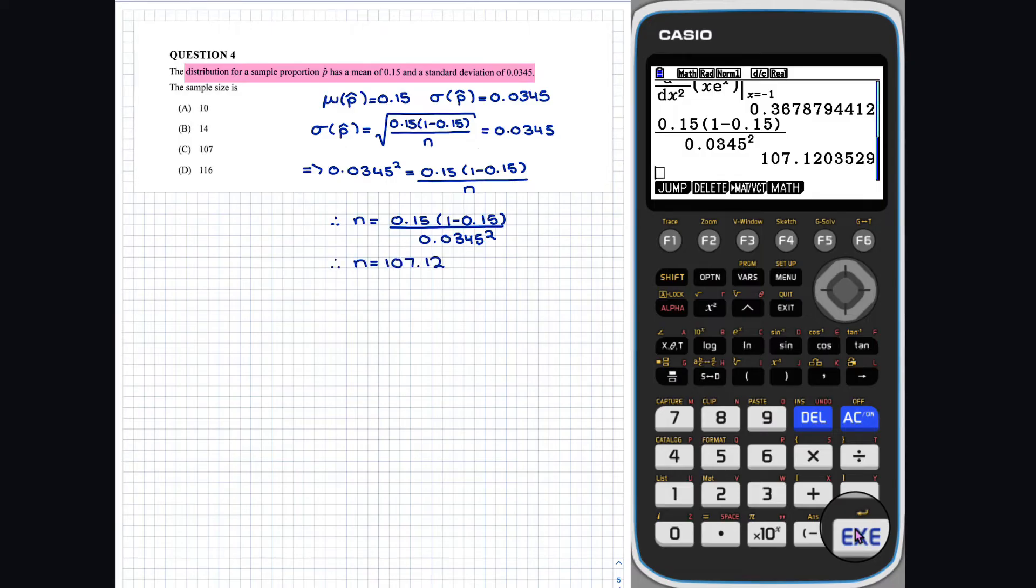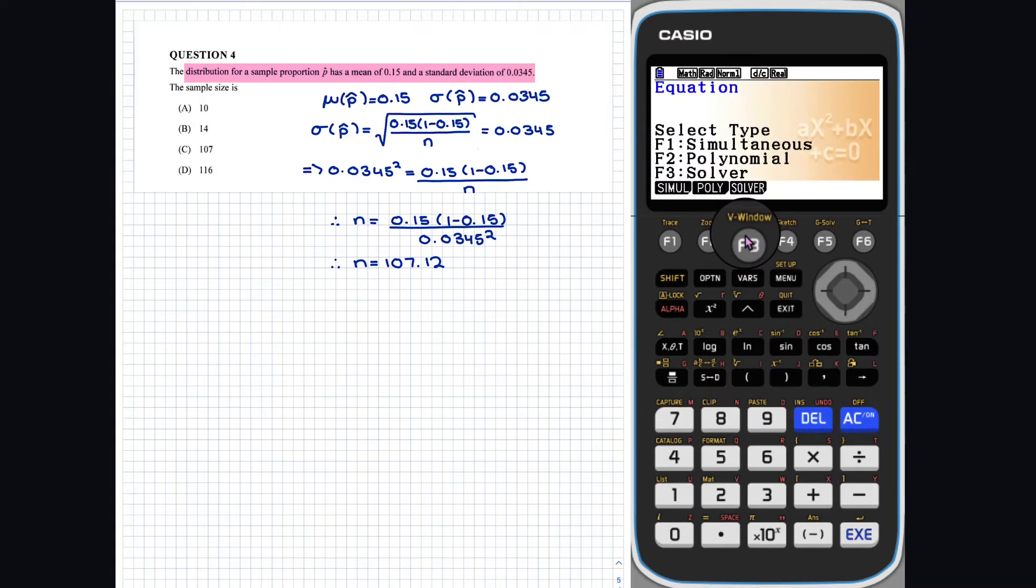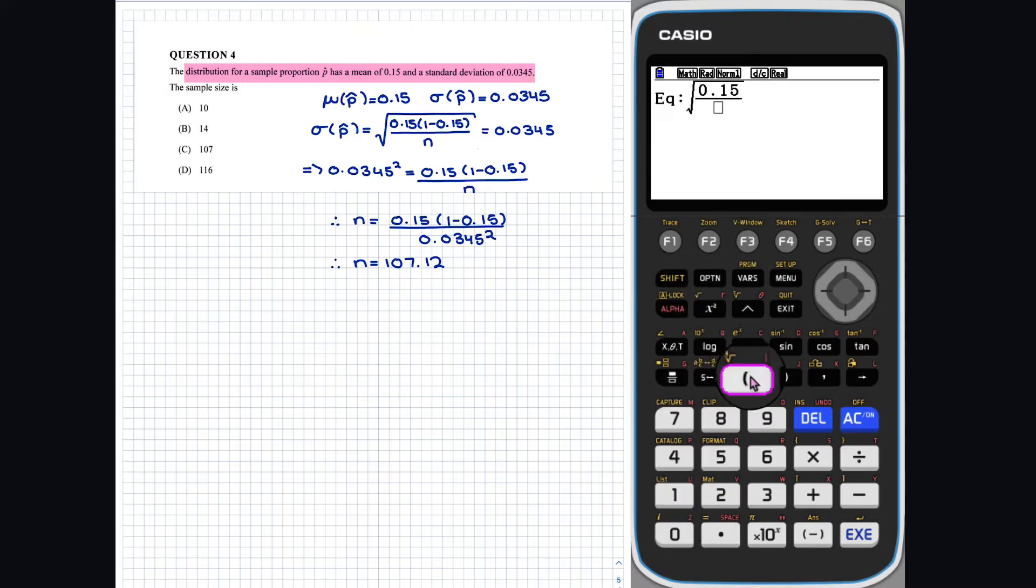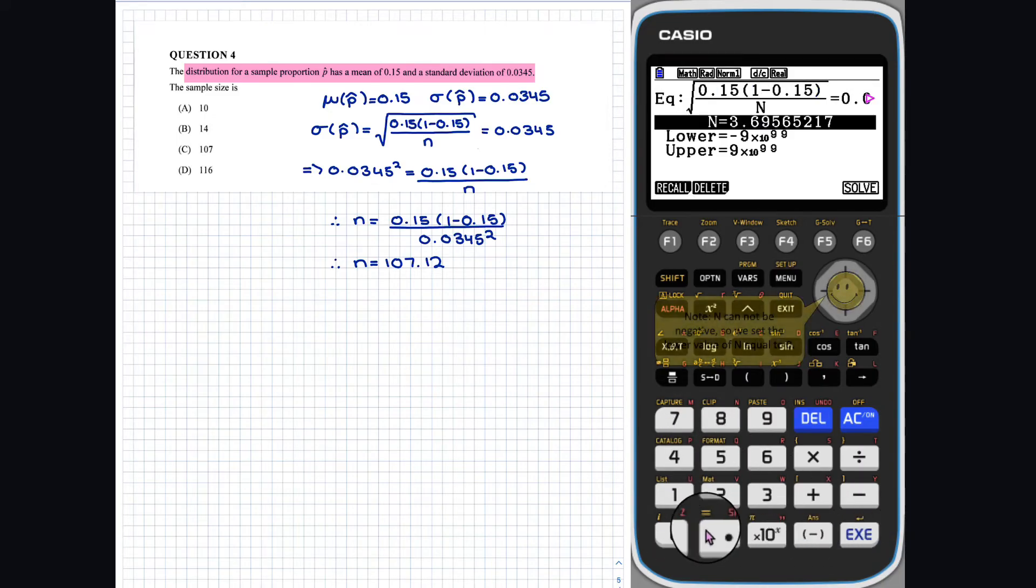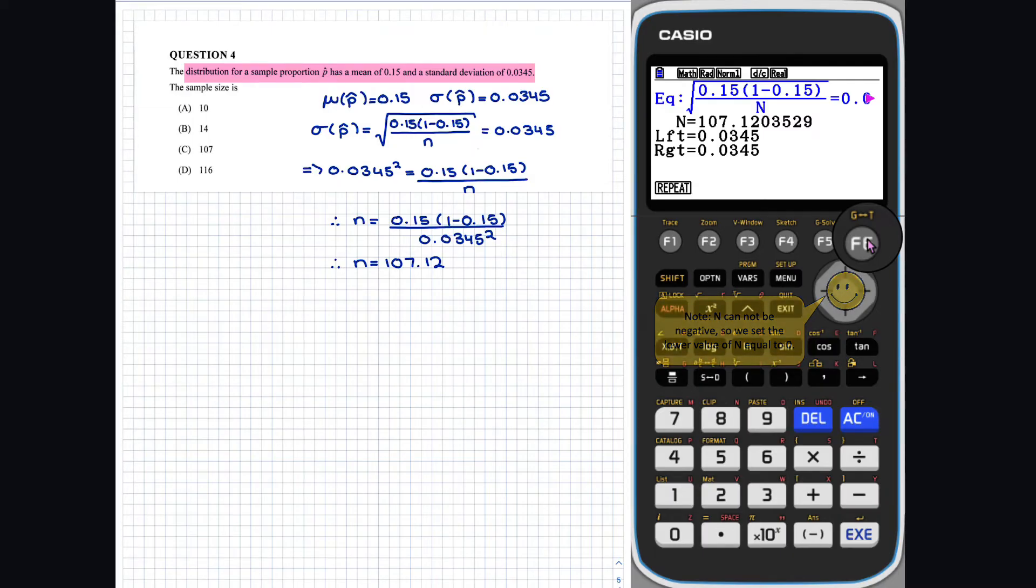Alternatively, we can just use the solver app and directly solve this without manual labour. As we can't have 0.12 of a person, the sample size is 107.